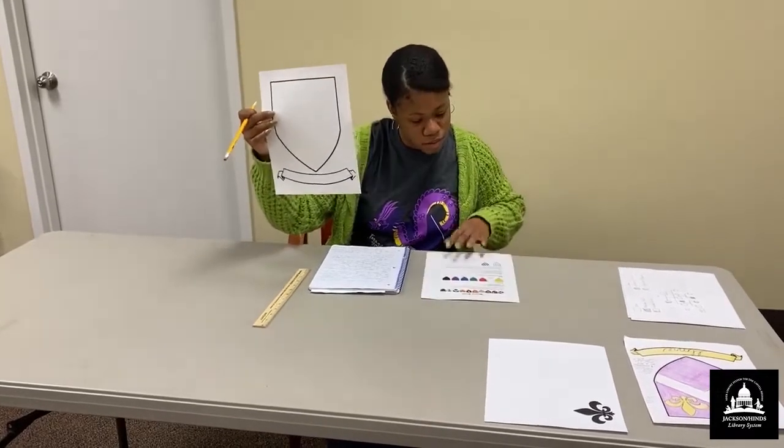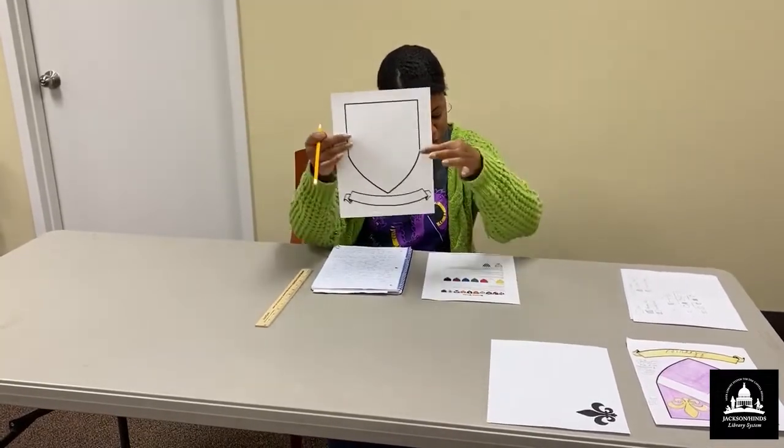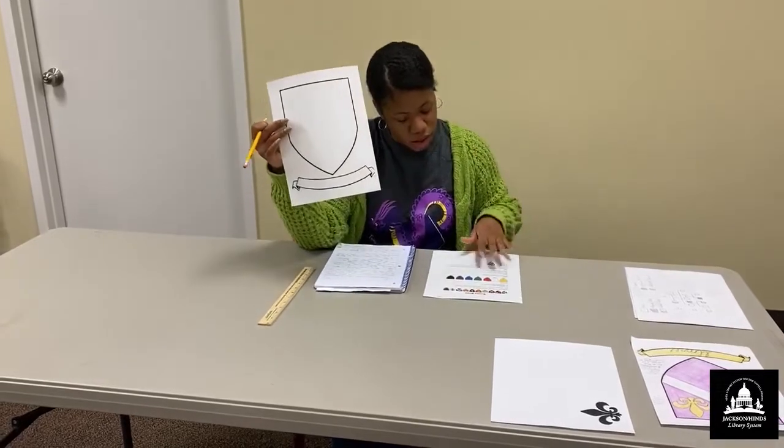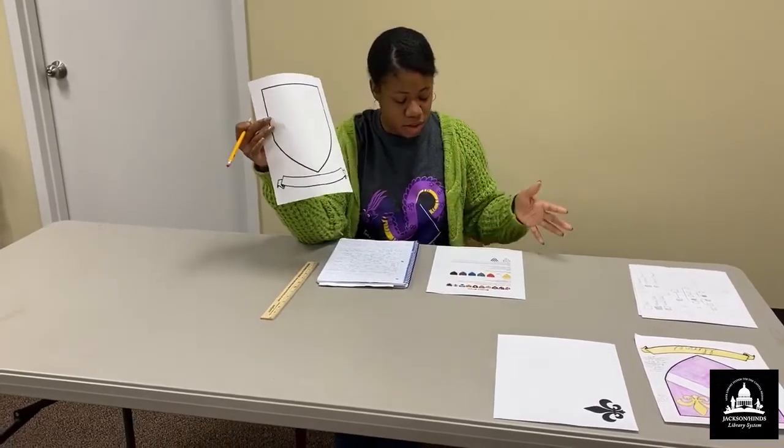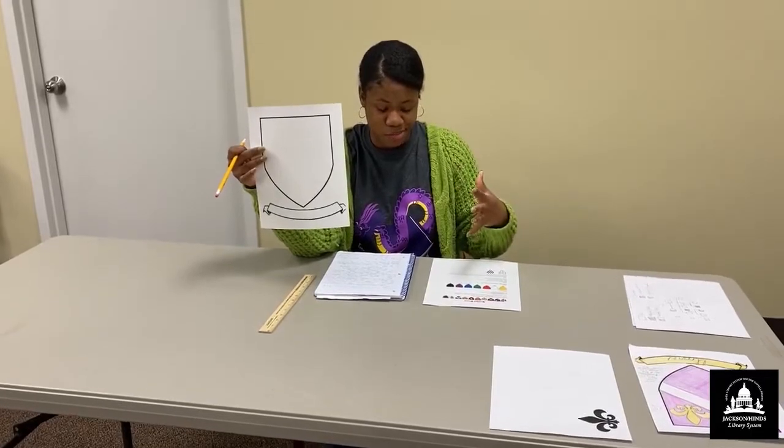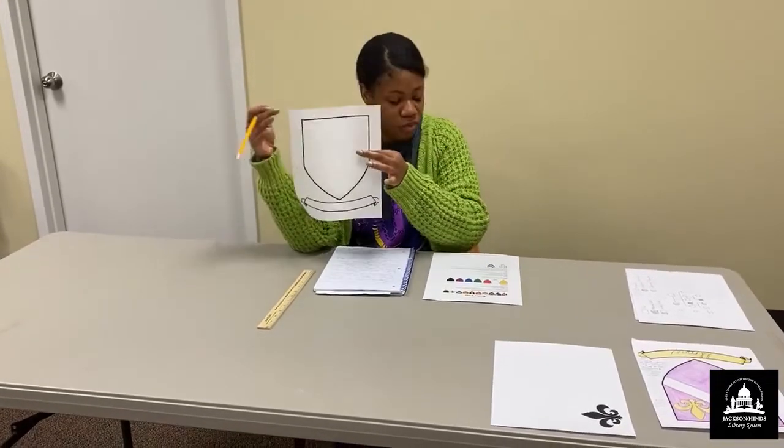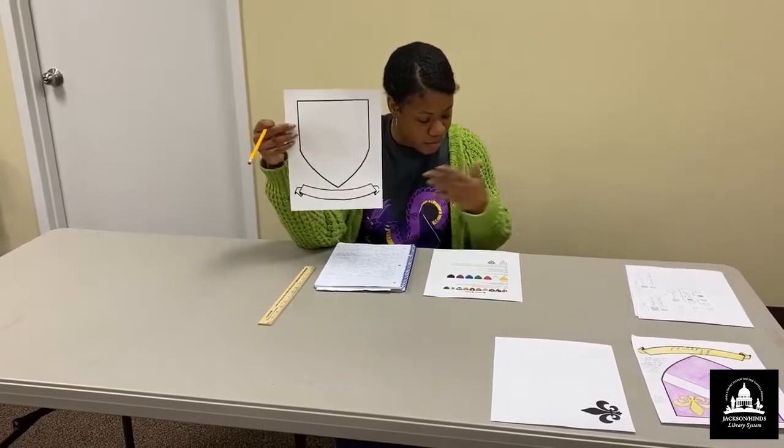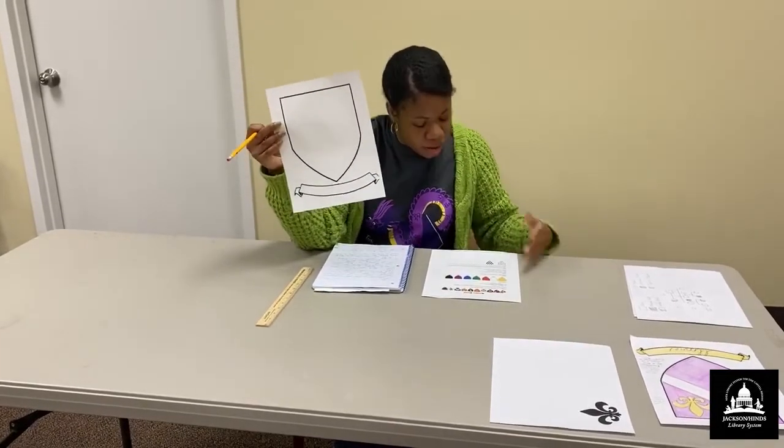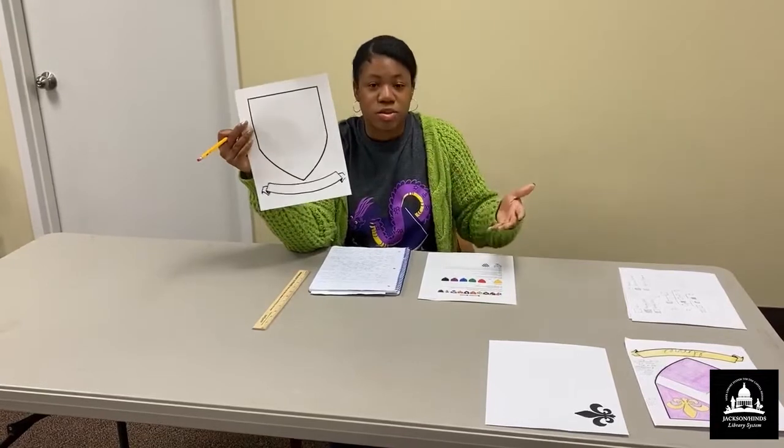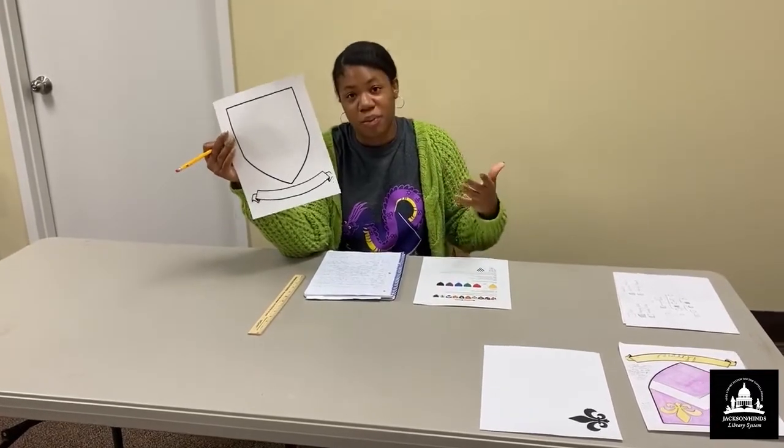So I'll get my notes. All right. So this is our escutcheon. And you can have different colors to represent different things you want to represent in your coat of arms, such as, like, if I use purple today. Purple shows royalty, justice, and power.